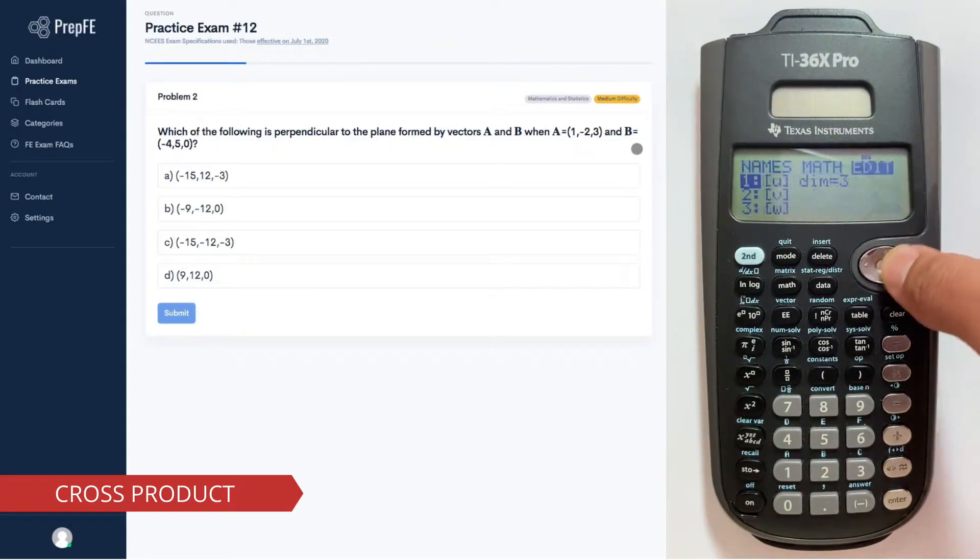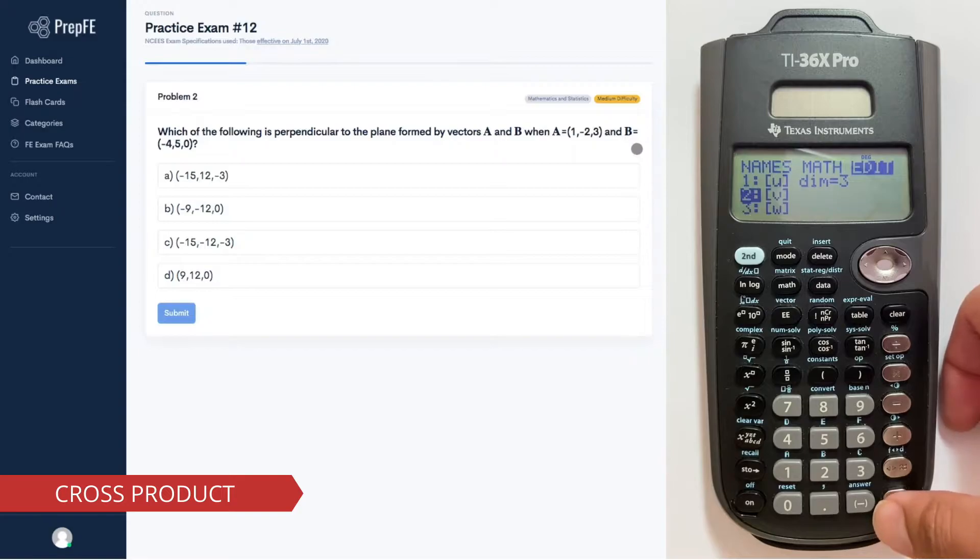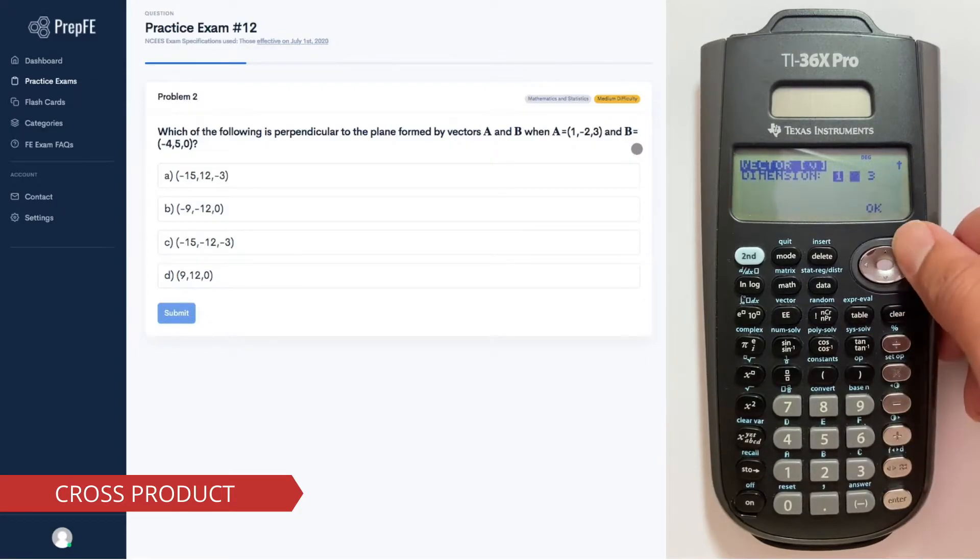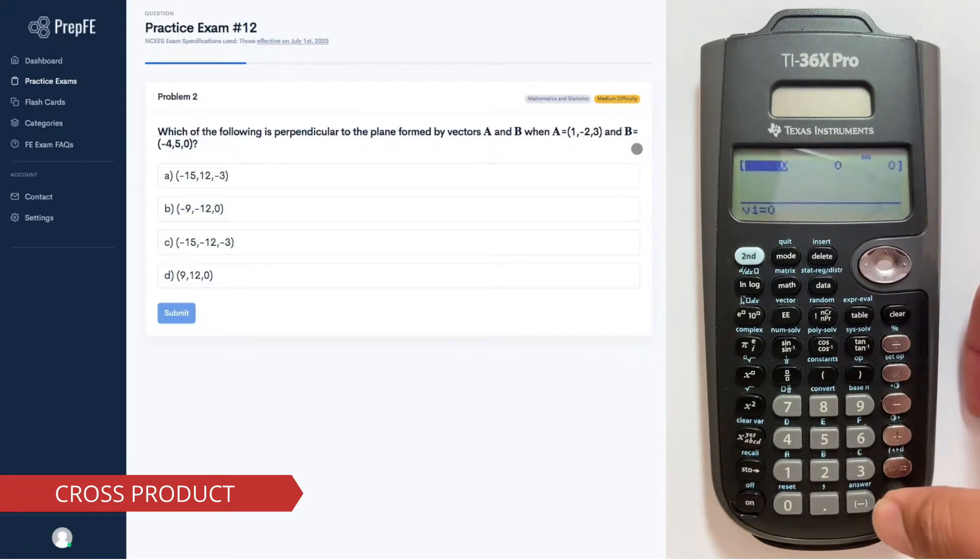We go to Second, Vector, then go to Edit. Select three dimensions, and that'll be negative 4, 5, and 0.